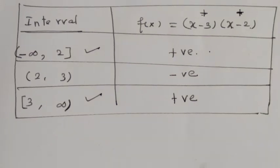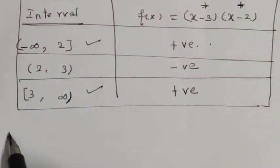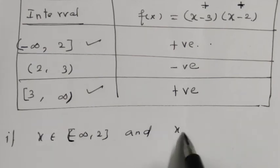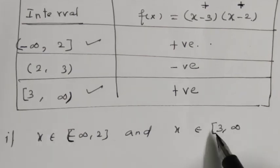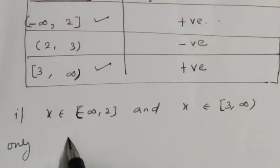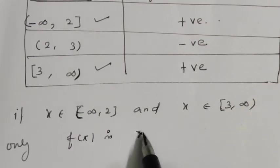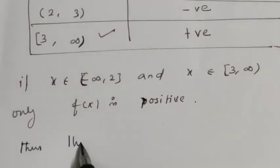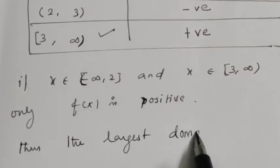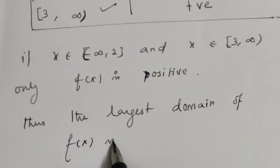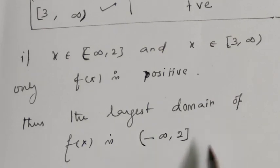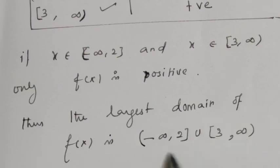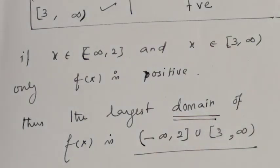We need f(x) greater than or equal to 0, so we take the positive intervals. x belongs to minus infinity to 2 (open interval) and x belongs to 3 to infinity (closed at 3). Thus, the largest domain of f(x) is minus infinity comma 2, open bracket, union, closed bracket 3 to infinity. Thank you.